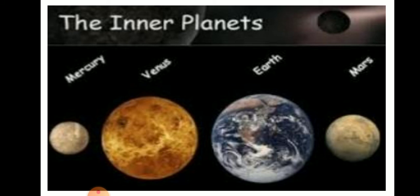Let us now discuss about Venus. Though Venus is not the closest to the sun, it is the hottest planet of the solar system, and it is also called the morning and evening star. The period of revolution for Venus is 225 days.